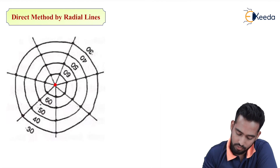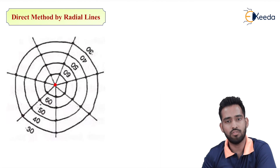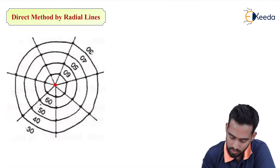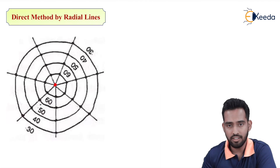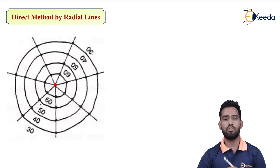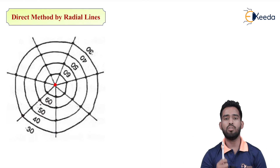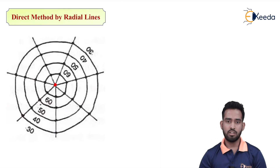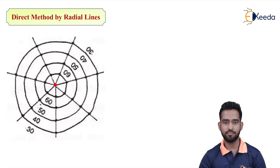After this we have to set up a leveling instrument. We can use auto level, dumpy level, theodolite, or any instrument. After that we require a follower who will go ahead following our orders — a follower with a leveling staff. Now what we have to do: first of all we have to find out the height of instrument and the RL of your station point.